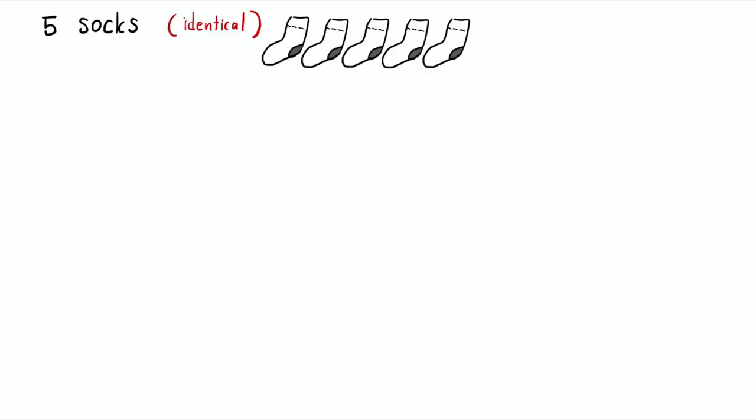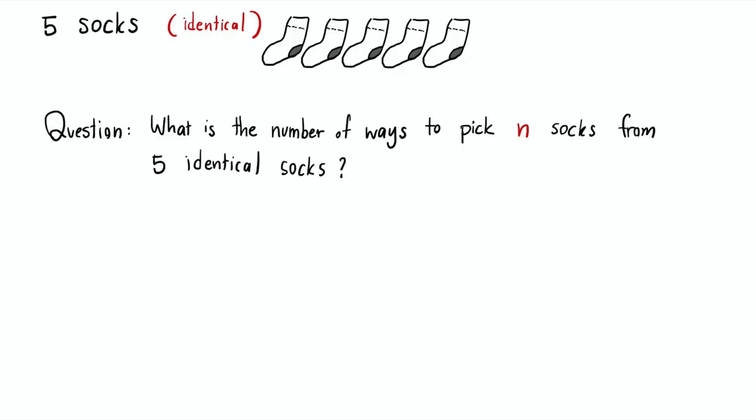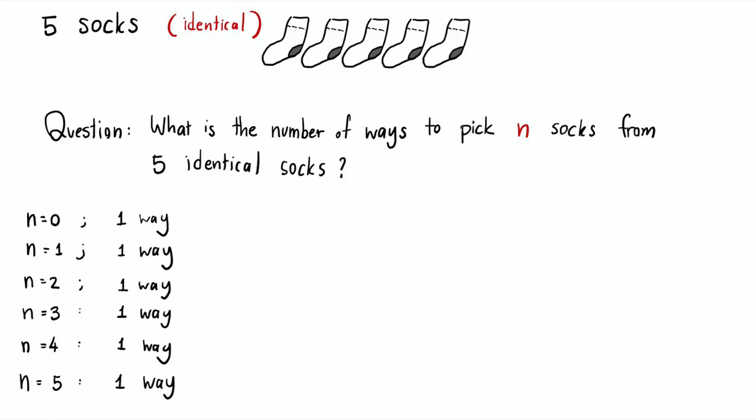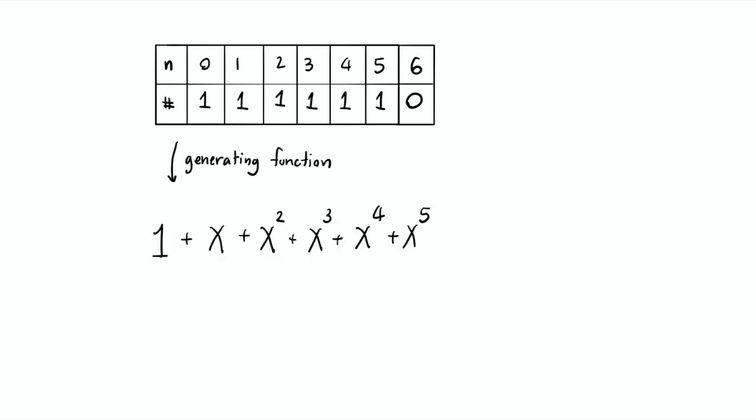With that in mind, let's do one more example. Instead of 4 shirts, let's say we have 5 socks, but these 5 socks are identical. Mathematically, being identical means if you want to pick 1 sock out of 5, there's only one way — it doesn't matter which one you pick, they all look exactly the same. So we ask the same question: the number of ways to pick n socks out of 5. For n equal to 0 through 5, there's one way each. For 6 socks, zero ways. So the generating function is 1 + x + x² + x³ + x⁴ + x⁵.